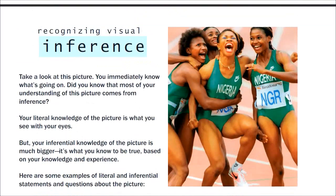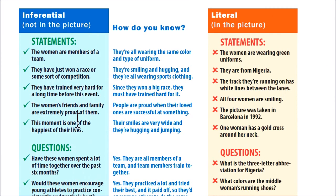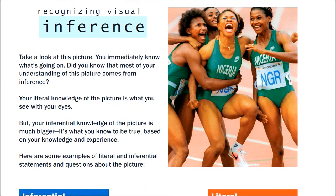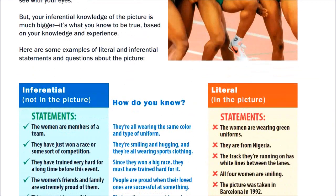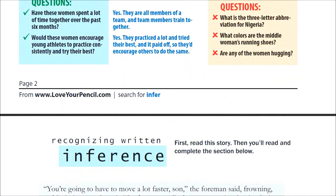Here is a lot more detail about the picture — samples of inferential statements and literal statements, with the question 'how do you know?' For example, here's an inferential statement: 'This moment is one of the happiest of their lives.' How do you know? Because their smiles are very wide and they're hugging and jumping. That's the evidence that it's a very happy moment in their lives.